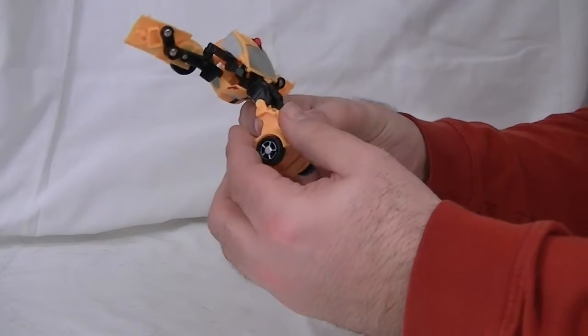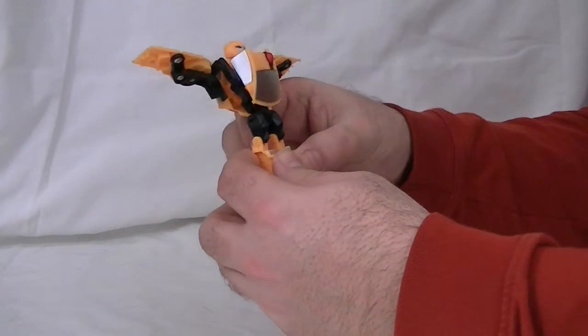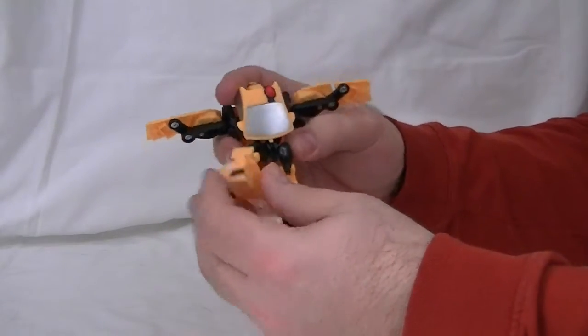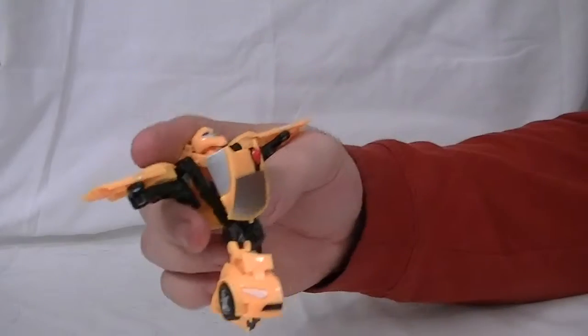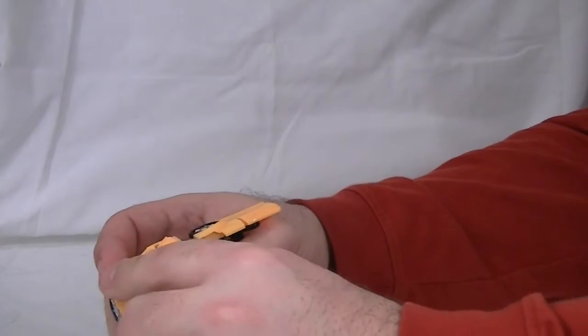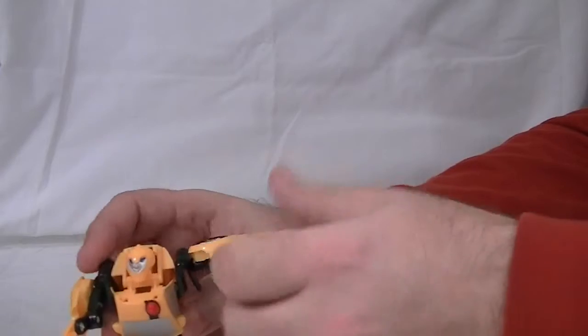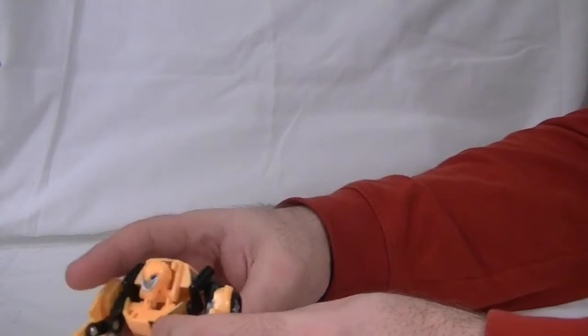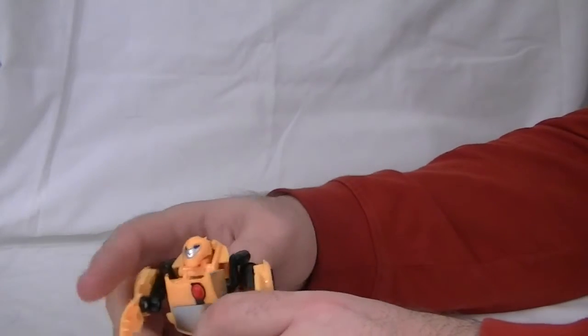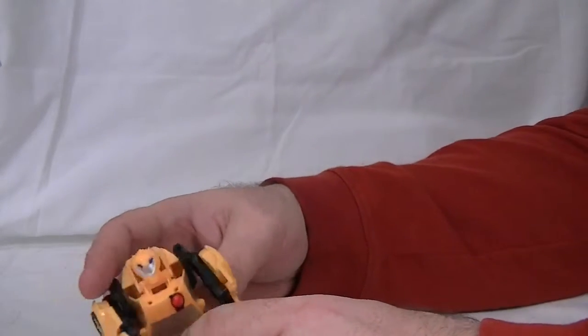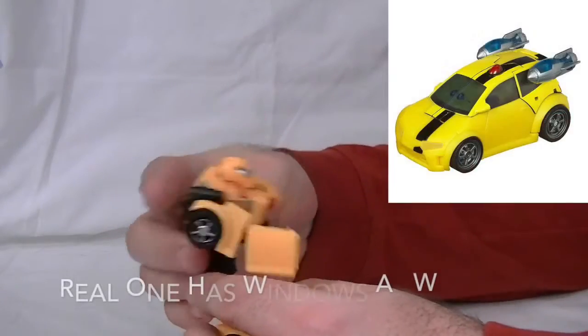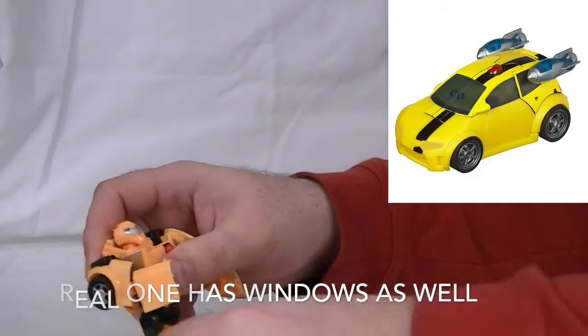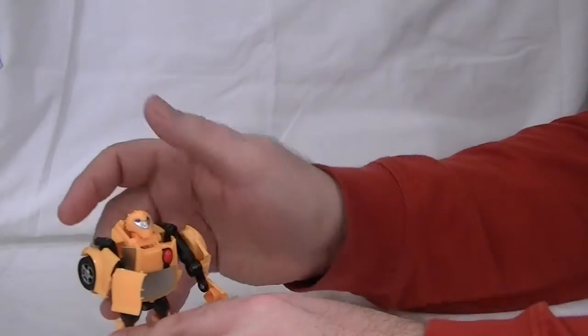His legs go down. His legs do separate. And he does actually have some articulation, so he can look all cool. His arms still weird me out though. And the toy that comes out actually has two additional pieces. They look like weird little thruster things, and I'll put a picture up there so you can see it.